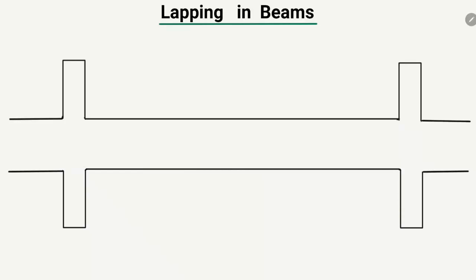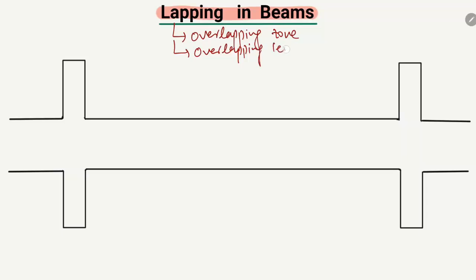Hello guys, welcome back to the Civil Engineering YouTube channel. Please subscribe to our channel for daily civil engineering videos. Today's lecture we are going to explain the lapping in beams. There are two important things to be considered: one is the overlapping zone or region in beams, and the second is the overlapping length of the steel bar in beams. These two topics will be explained with the help of an example.